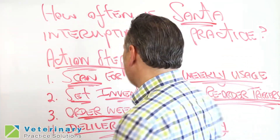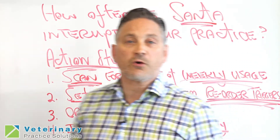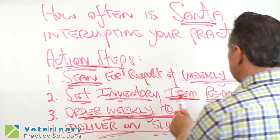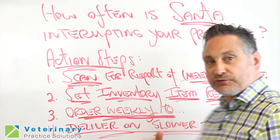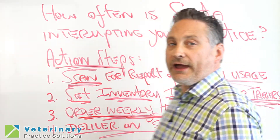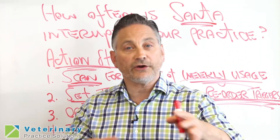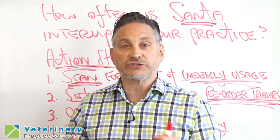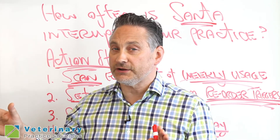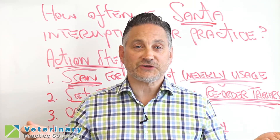So here are the key steps again. Number one, scan your system for how many items at what quantity you're using on a weekly basis. Number two, build and set your inventory item reorder trigger points up to a certain maximum. Number three, print off your weekly order or put it online so that it arrives on a day, morning, or afternoon when you're slow, and then a couple of staff can step out of the daily routine, put it all together, check it, and make sure the prices are correct in the computer.